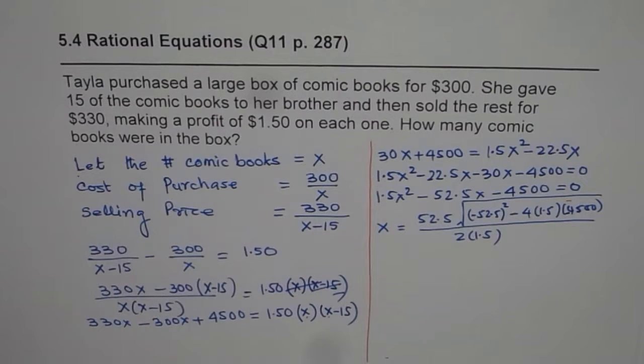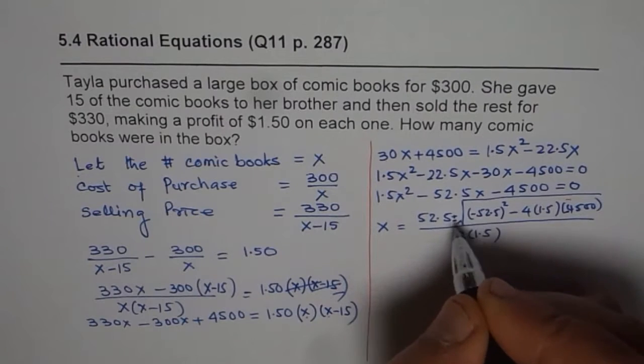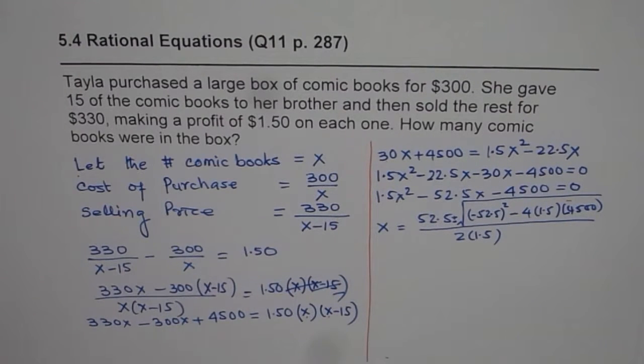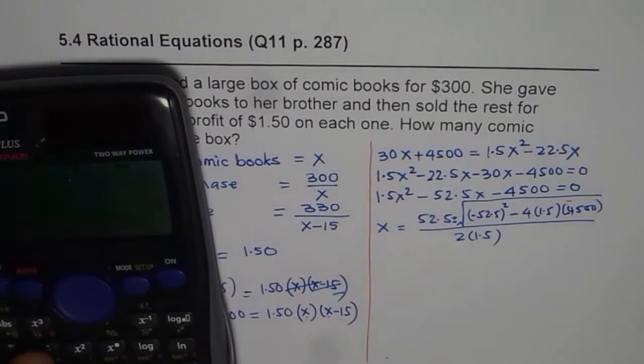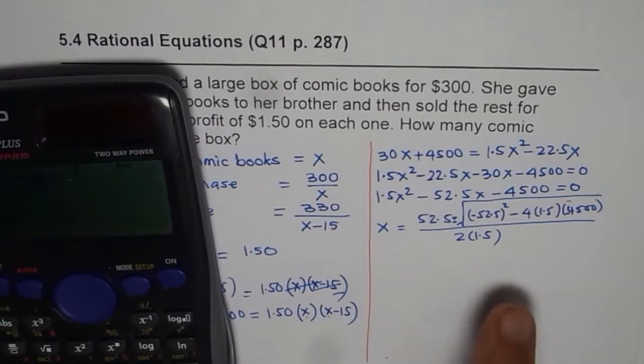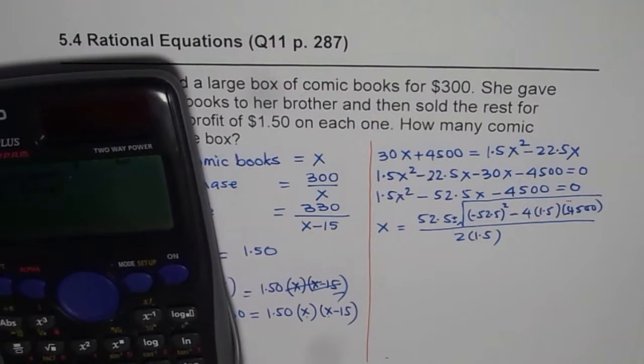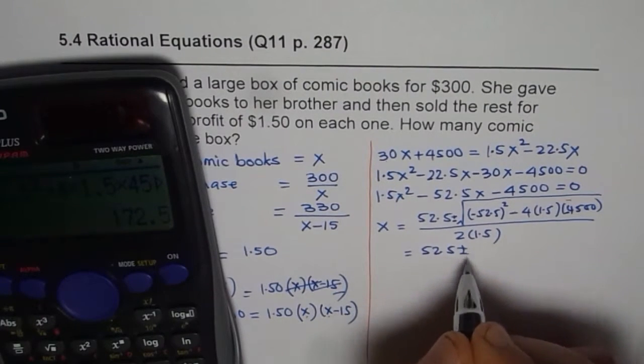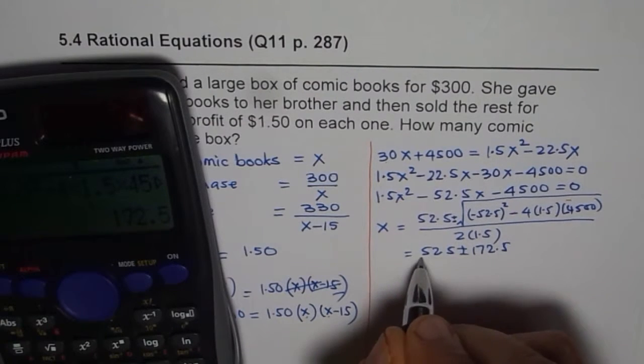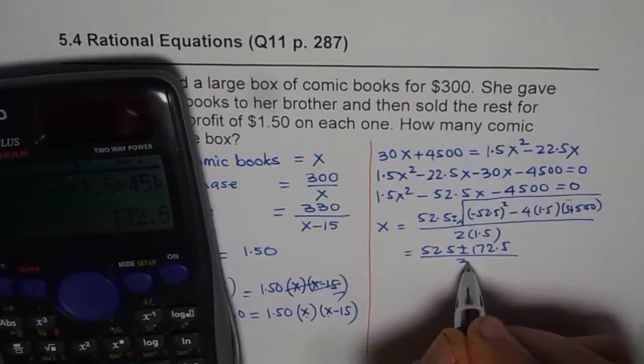Now we can use calculator and find the answer. So within the square root we have 52.5 square, minus and minus becomes plus, so we'll do plus 4 times 1.5 times 4500. So we get around 172.5, so we get here 52.5 plus or minus 172.5 divided by 1.5 times 2 is 3.